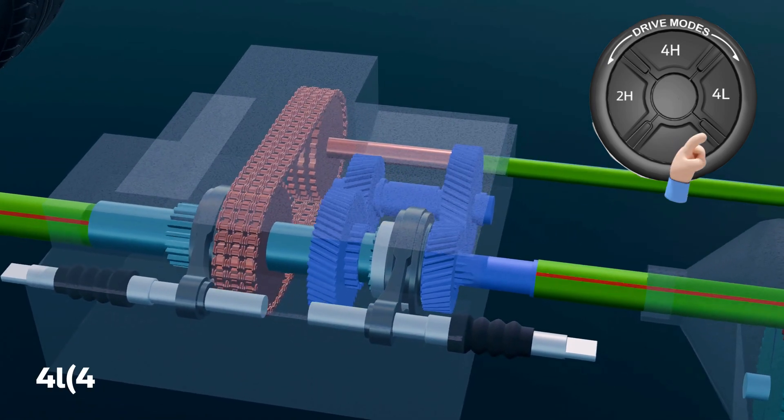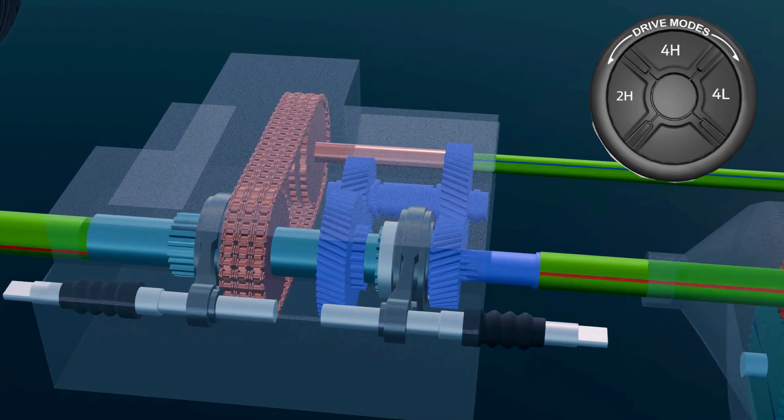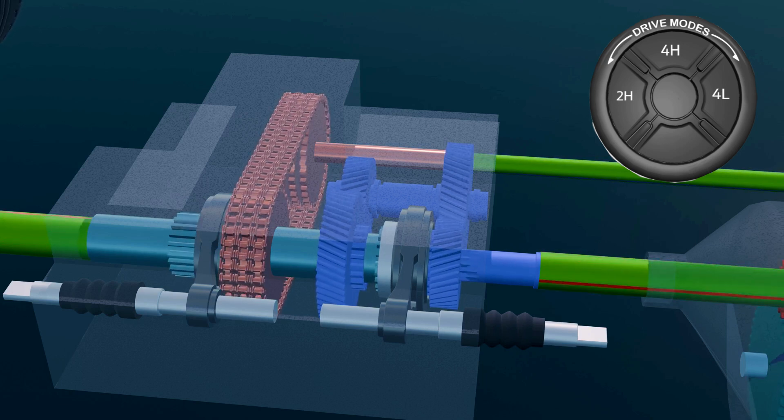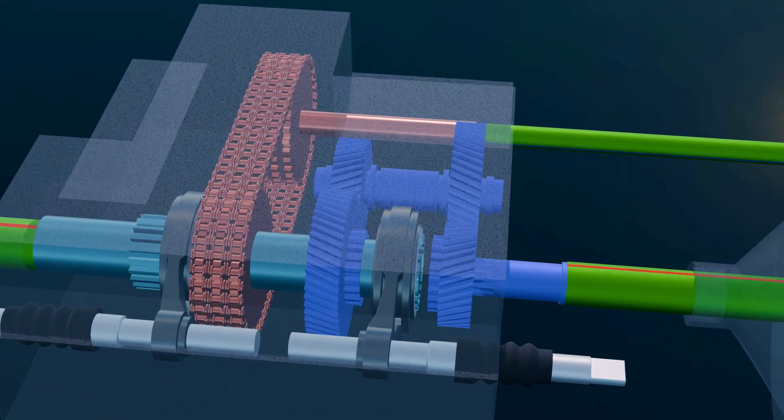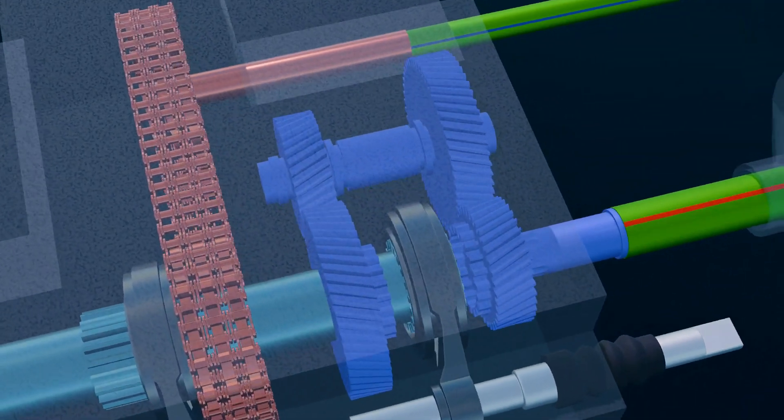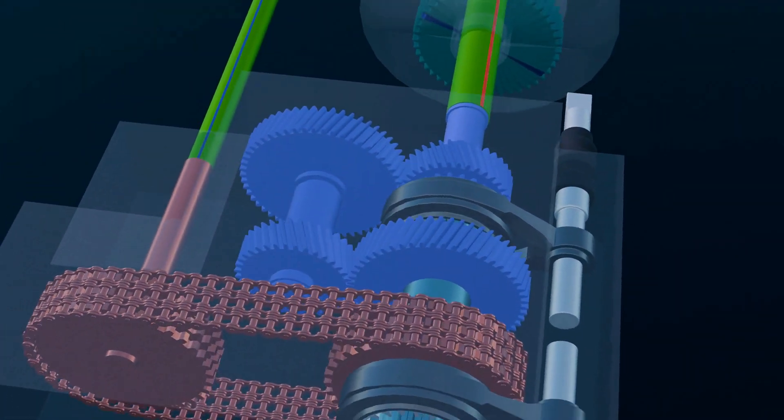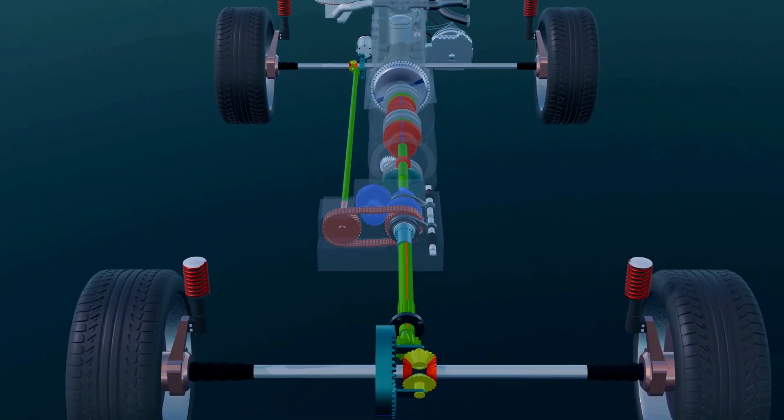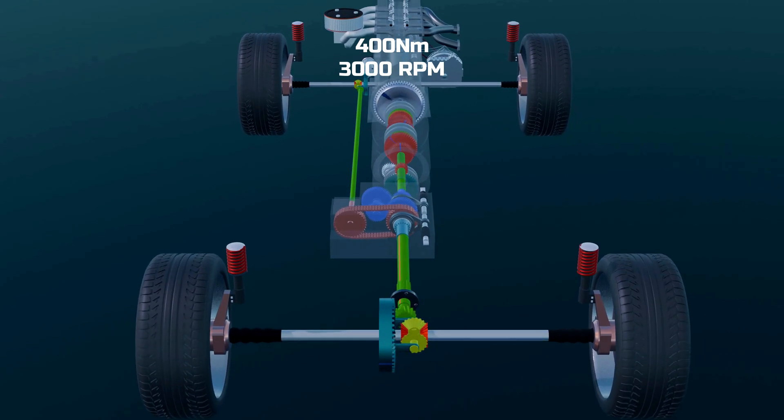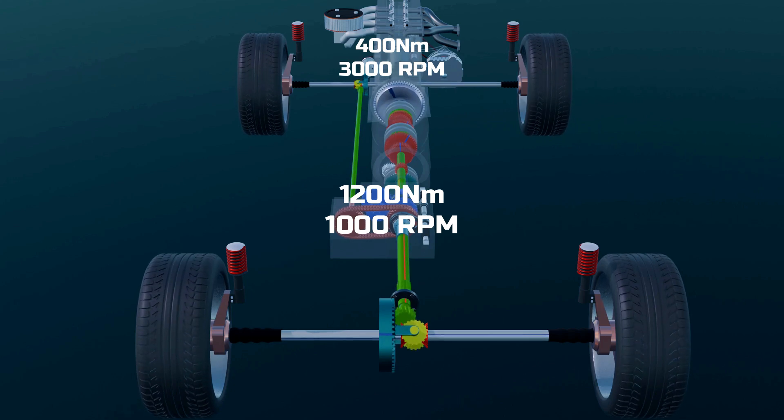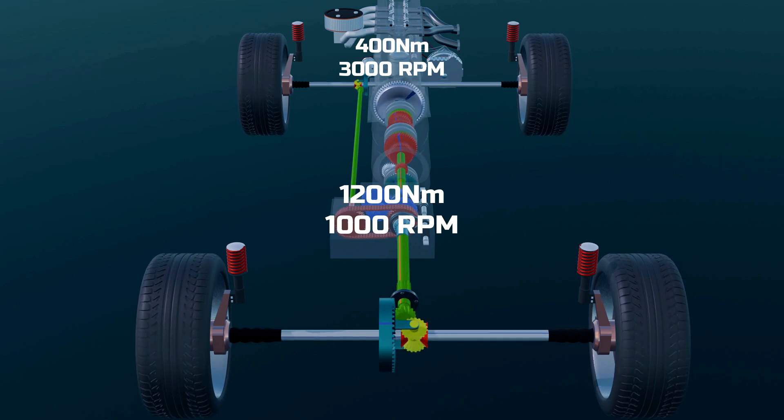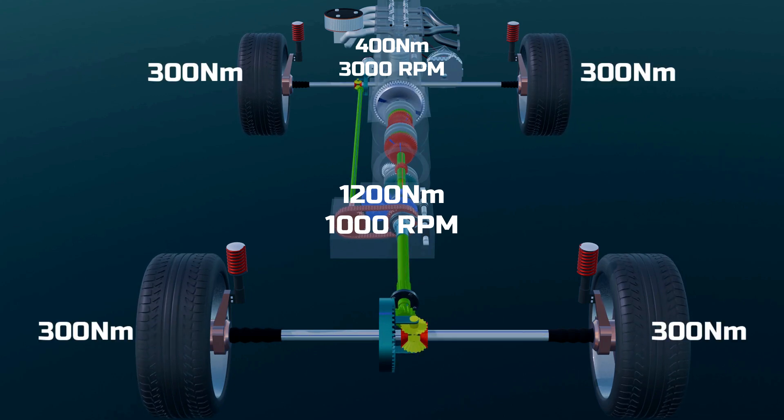When 4L mode is activated, a front sleeve disengages, and power is routed through this additional shaft, driving increased torque to both front and rear axles. For example, if the engine produces 400 Nm of torque at 3000 rpm, this mode multiplies it to 1200 Nm while reducing engine speed to 1000 rpm, helping each tire receive around 300 Nm of torque.